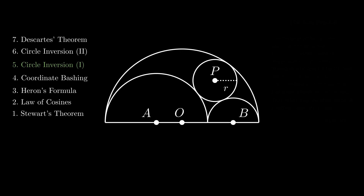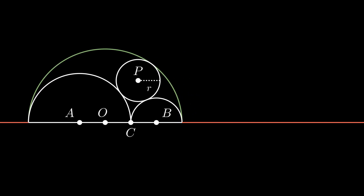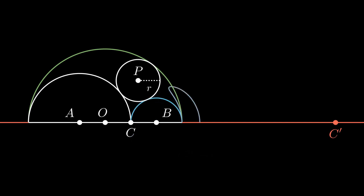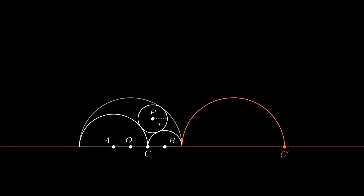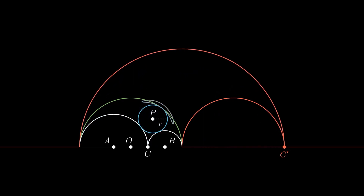As usual, the first decision is which circle to invert on. Here we're going to choose the outermost semicircle, which I've highlighted green. The diameter inverts to this red line, and we're going to look at this point C which lies on the circles centered at A and B. Using the fact that the radius of the circle of inversion is three, we can figure out this point inverts to a distance of nine away from the origin. Since they both touch C, the two semicircles when inverted must touch C dash.